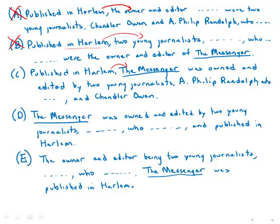In C, 'published in Harlem' modifies the messenger — finally, that's modifying the thing it should modify. In D, we have 'the messenger was owned' and then way at the end of the sentence 'published in Harlem.' Both B and D seem to be playing the same game: separating the noun from the modifier by putting them at opposite ends of the sentence. So D is incorrect.